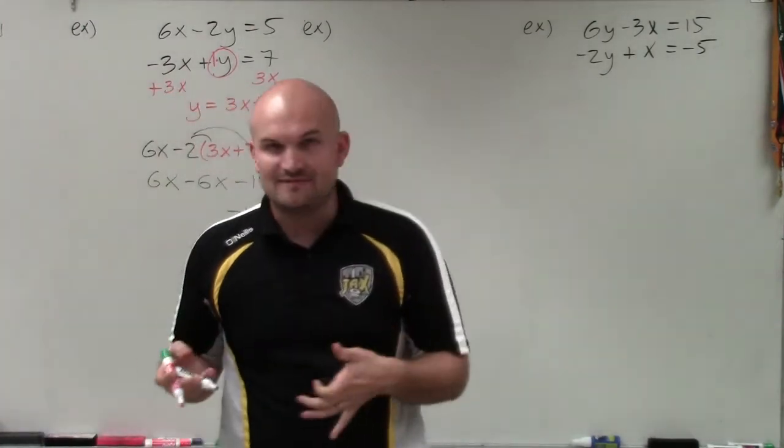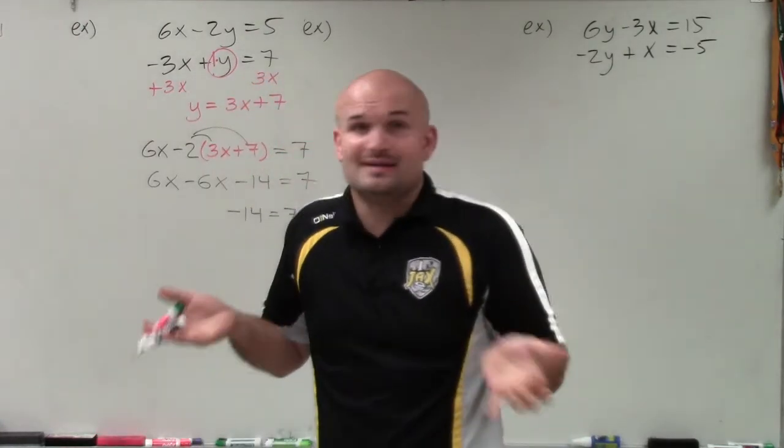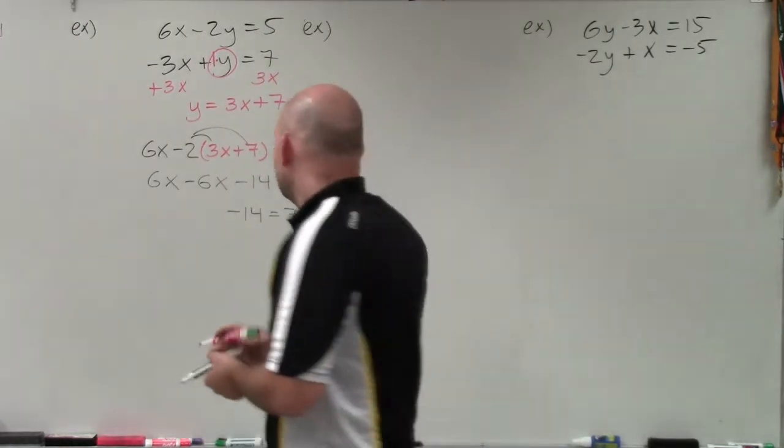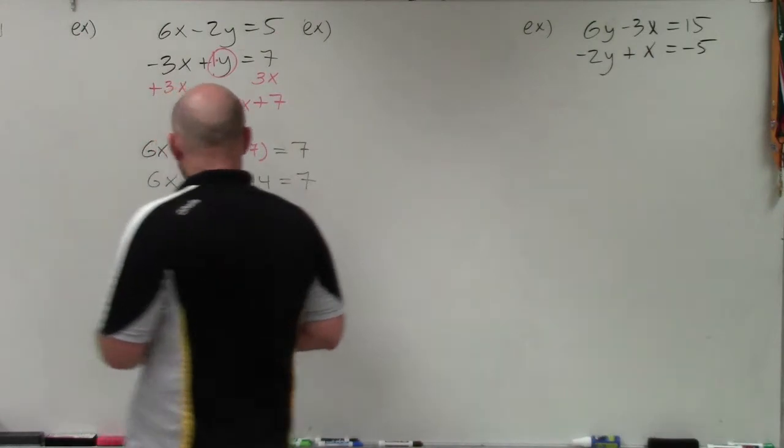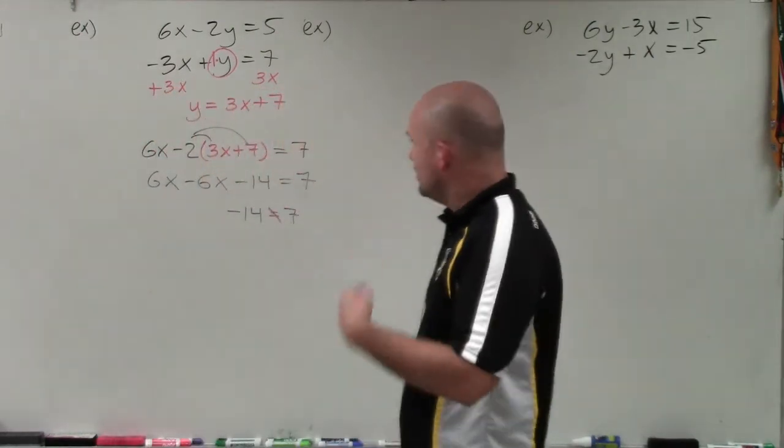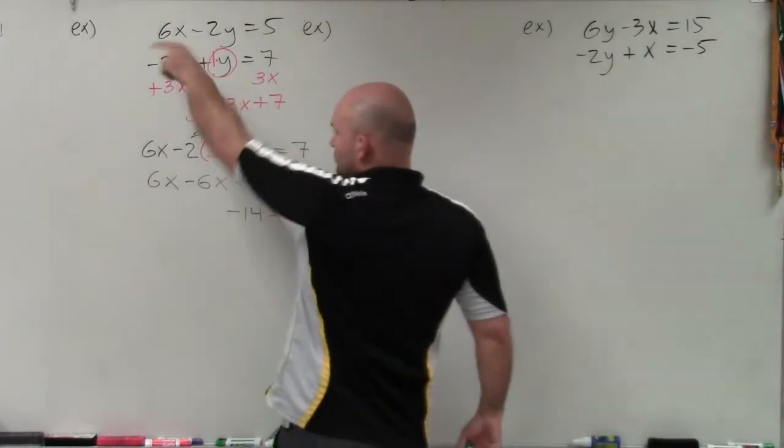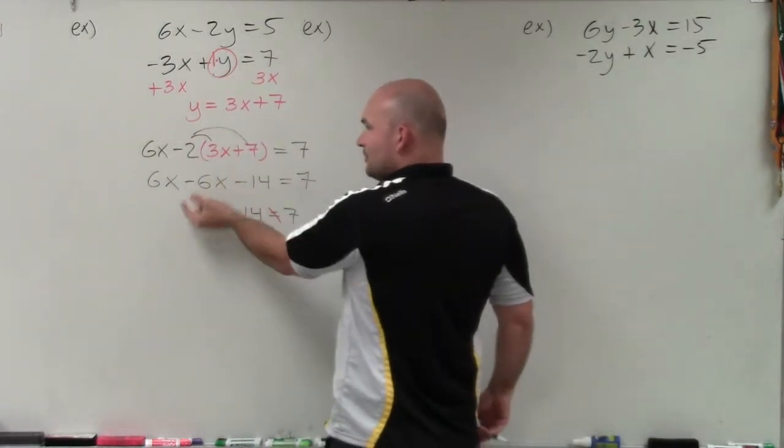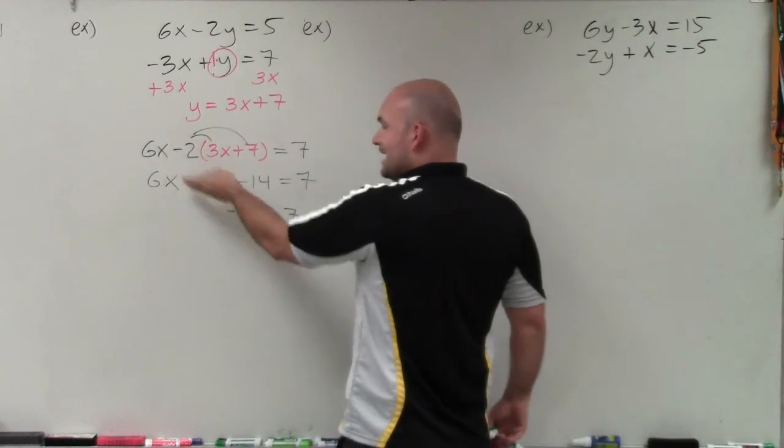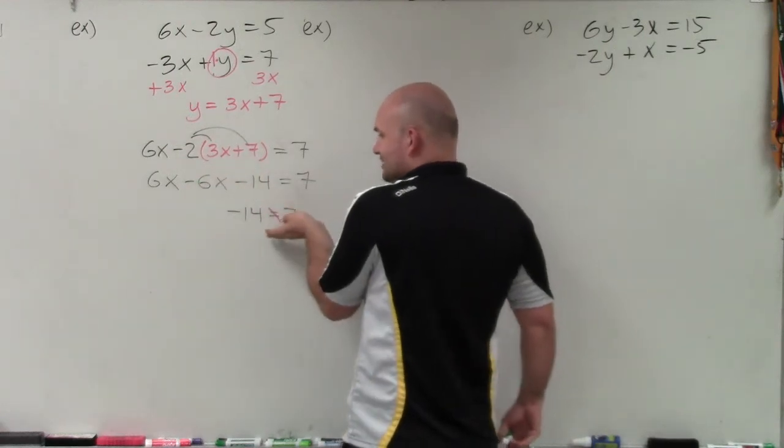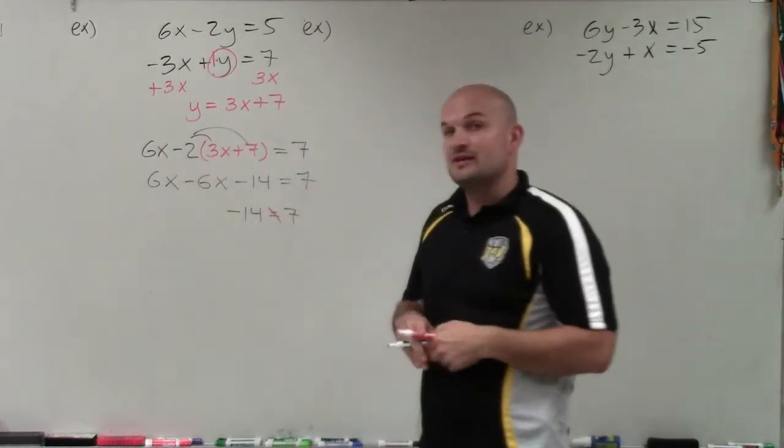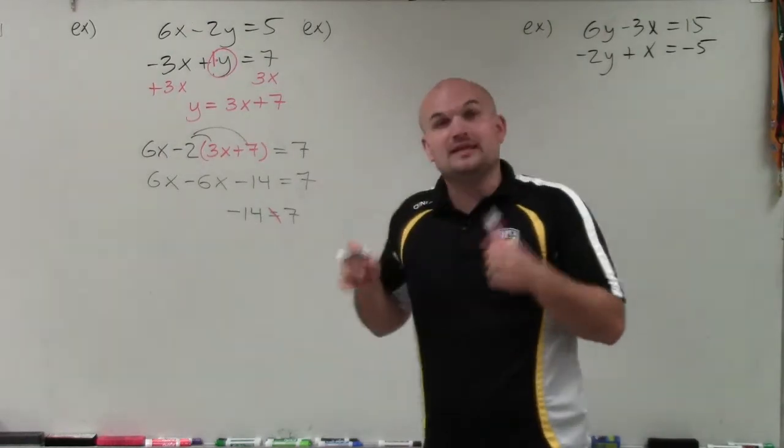Well, negative 14 is never going to equal 7. So therefore, that is incorrect. It is not true. So when you are solving using substitution and you come into, once you plug it in, you're using all the same steps. But rather than solving for x here, I got rid of my x's and I came up with a statement that is not true. So therefore, this would be no solutions.